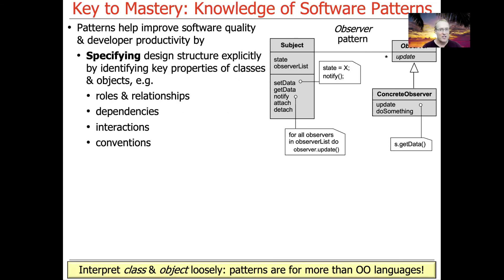Patterns also help by specifying design structure explicitly through identifying the key properties of classes and objects — the common roles and relationships. We have a subject role, an observer role, and a concrete observer role. A subject may have multiple observers. The observer is used as the base class of the concrete observers so you can specialize, customize, and override methods. For interactions, when someone calls notify on the subject, it iterates through the list of observers and dispatches them by calling their update method. Conventions may specify whether the observer and subject run in the same thread or different threads using inter-process communication mechanisms.